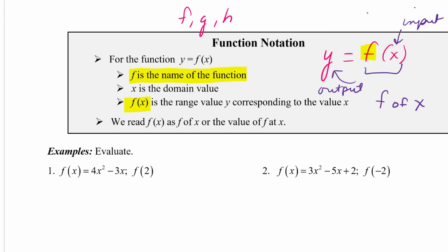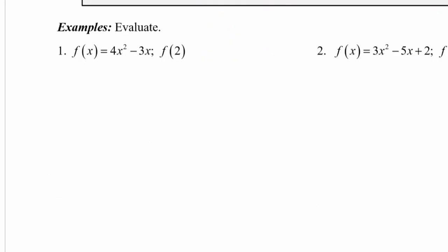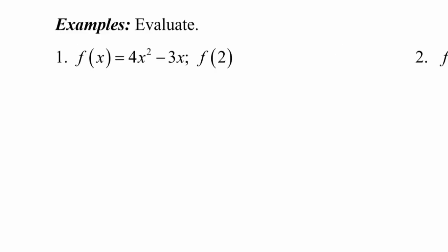So now let's use this function notation to evaluate some function values. Looking at the first example, we have the function f of x equal to 4x squared minus 3x — a quadratic function — and we're asked to evaluate f of 2. Using the function notation, y is equal to f of 2, which means that 2 is the x value, and we are asked to substitute 2 into our function and evaluate the y value that corresponds to x equals 2.